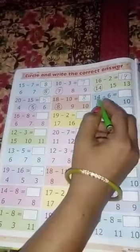In previous class you have studied about this, children. Circle and write the correct answer part 1, but today I will explain part 2. How can you solve this question?